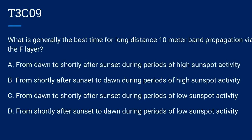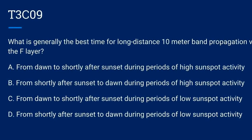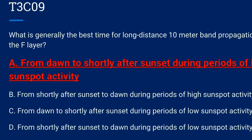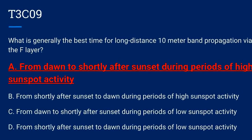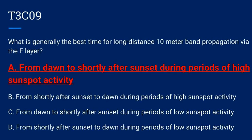T3C09. What is generally the best time for long-distance 10 meter band propagation via the F layer? A. From dawn to shortly after sunset during periods of high sunspot activity. B. From shortly after sunset to dawn during periods of high sunspot activity. C. From dawn to shortly after sunset during periods of low sunspot activity. Or D. From shortly after sunset to dawn during periods of low sunspot activity. The correct answer is A: from dawn to shortly after sunset during periods of high sunspot activity.